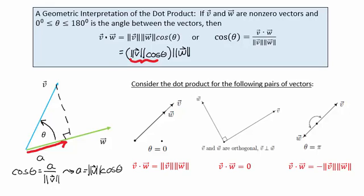Let's look at a couple of particularly important examples. If the angle between our two vectors is zero degrees, we know that the cosine of zero is one, so the dot product results in just the multiplication of the two magnitudes. If the angle between the two vectors is 90 degrees — if they're orthogonal — then the cosine of 90 degrees is zero, so the dot product of v and w would just be zero. Note that this only happens if the two vectors are orthogonal. And if our two vectors are pointing in opposite directions, the angle between them would be pi or 180 degrees, so the cosine of pi would be negative one, and the dot product of v and w would just be the negative of the product of those magnitudes.